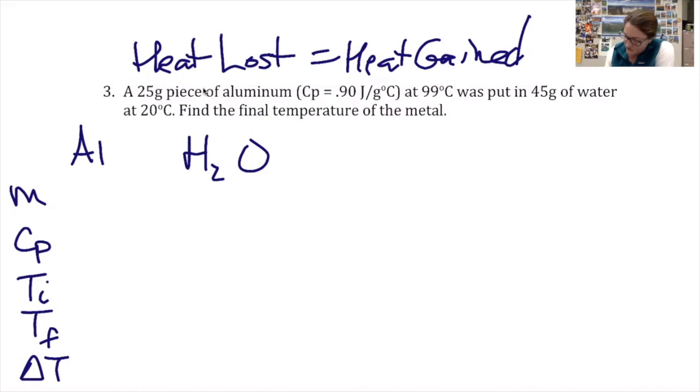So let's take a look at which numbers apply to aluminum. 25 gram piece of aluminum. So its mass is 25, its specific heat is 0.9, starting temperature is 99 degrees Celsius, and we're looking for the final temperature.